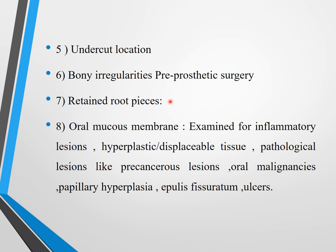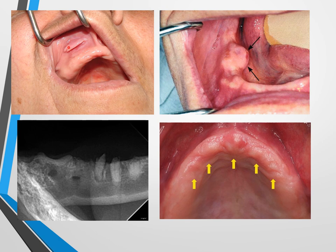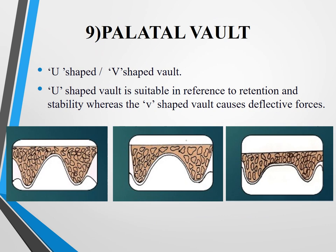Oral mucous membrane must be properly examined for inflammatory lesions, hyperplastic or displaceable tissues, pathological lesions or malignancies, hyperplasia, ulcers, and epulis fissuratum. Any issue with the oral mucosa must be resolved before proceeding with denture construction. Examples include overgrowth of gingival tissue, bony spicules, retained roots, and flabby tissue.